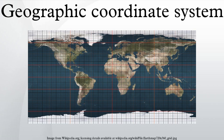The longitude of a point on the Earth's surface is the angle east or west from a reference meridian to another meridian that passes through that point. All meridians are halves of great ellipses, which converge at the north and south poles.